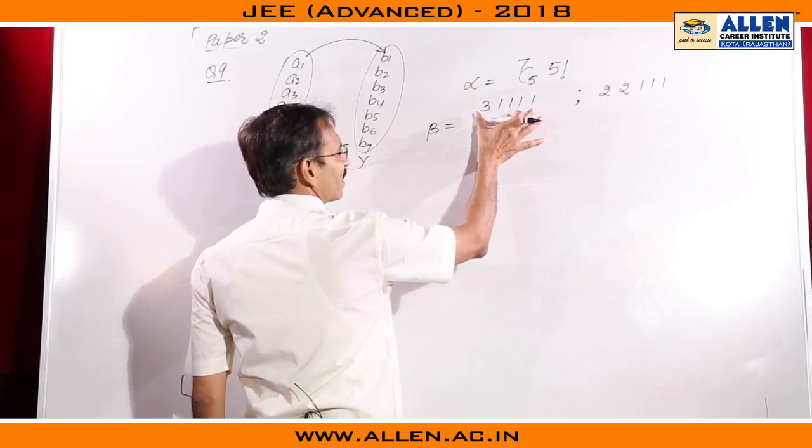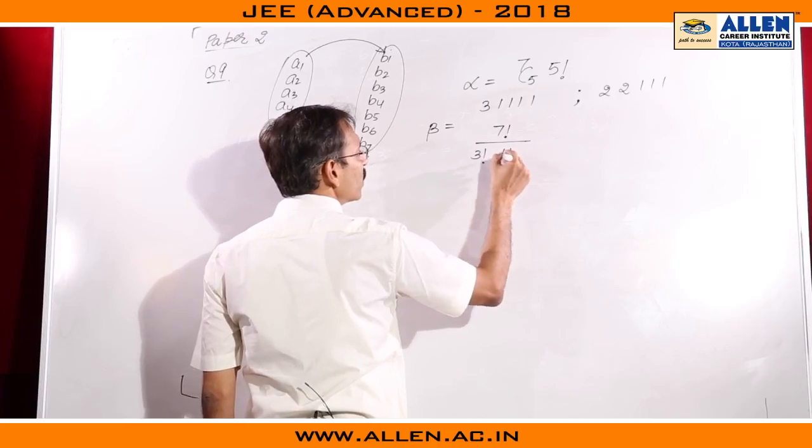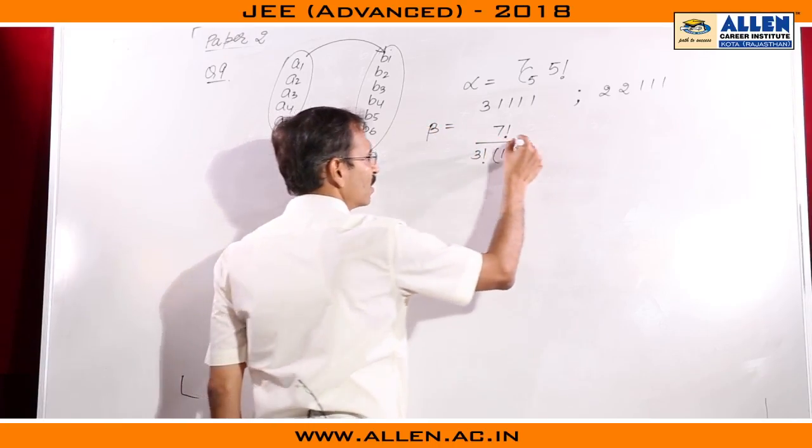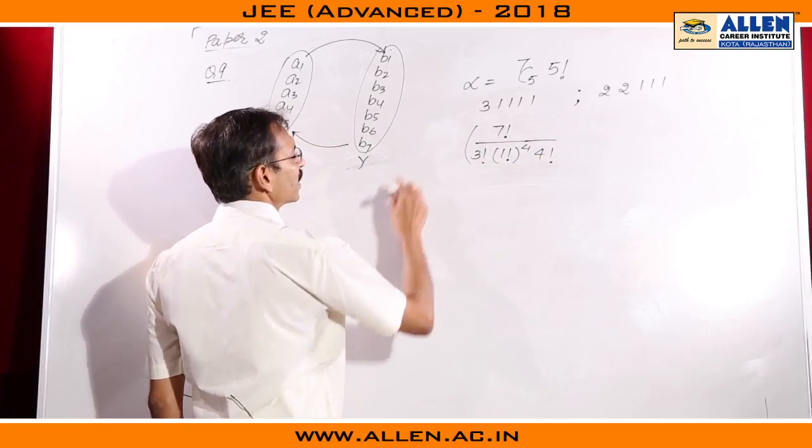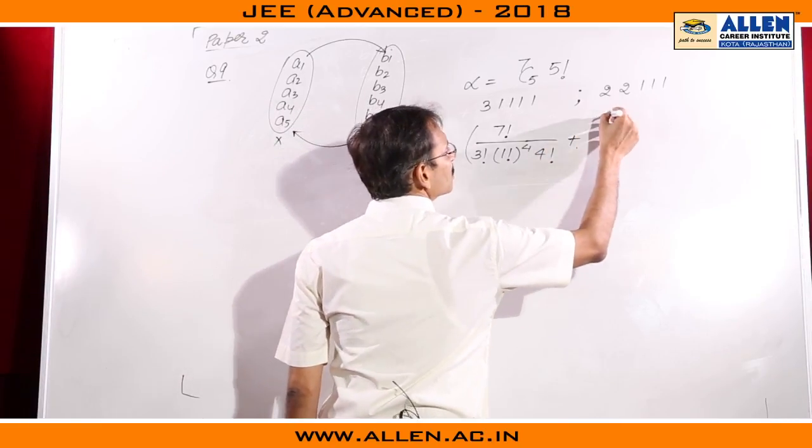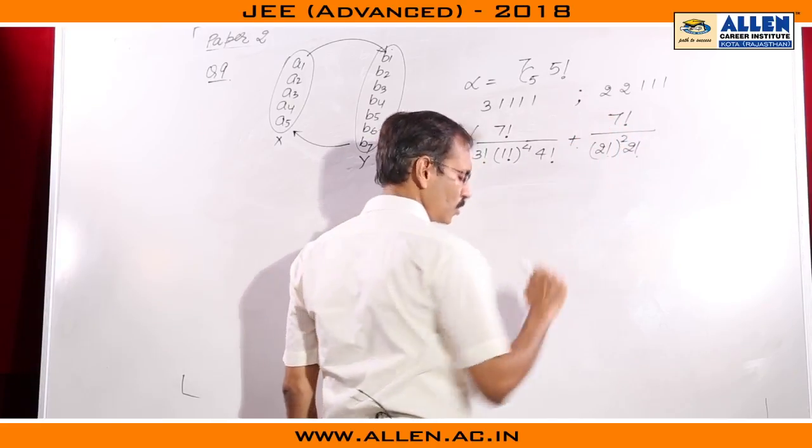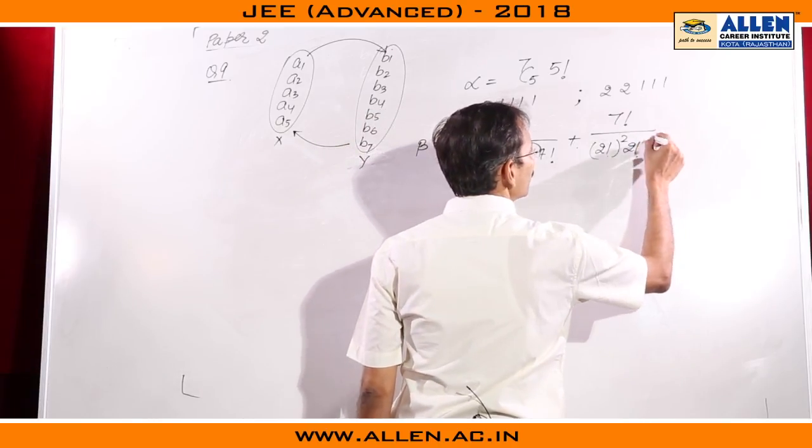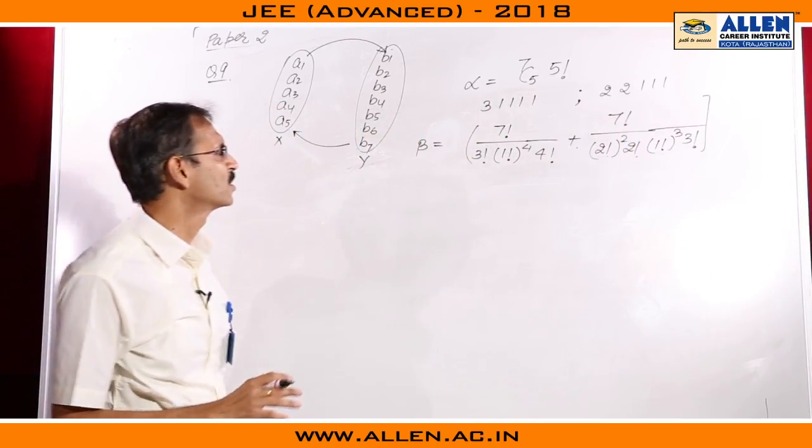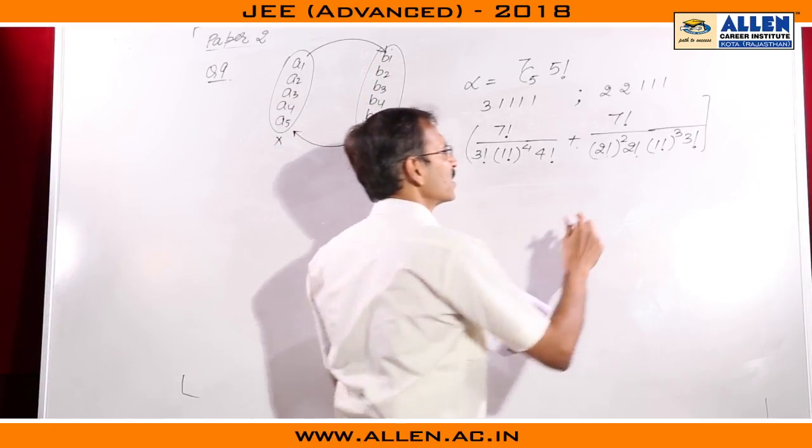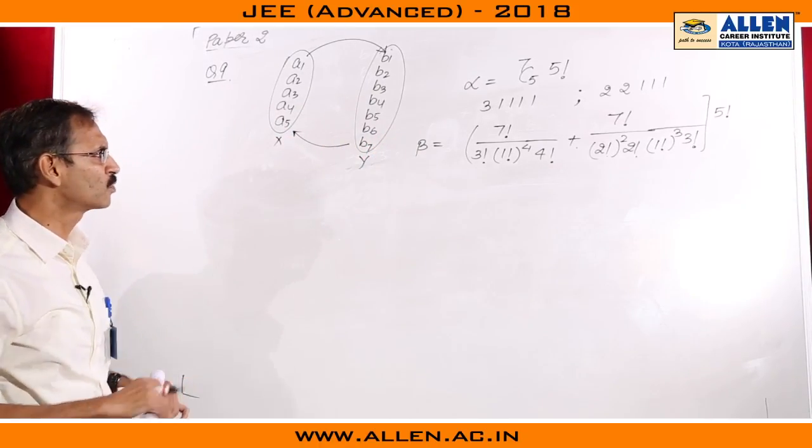Let's see in how many ways we can prepare 5 packets. 7 factorial upon 3 factorial, 1 factorial, 1 factorial, 1 factorial 4 times, multiplied by 4 factorial - this we are calculating is beta - plus 7 factorial divided by 2 factorial square into 2 factorial because there are 2 same size groups, 1 factorial cube multiplied by 3 factorial. These are the number of ways to make 5 groups out of these 7 things. We will disperse them to the elements of set X in 5 factorial ways. This will be the value of beta.